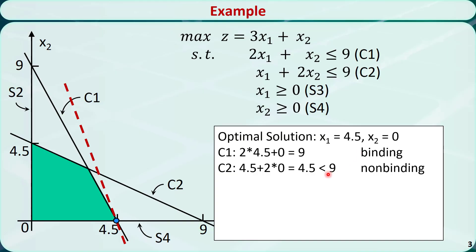For c2, we have 4.5 plus 2 times 0 is equal to 4.5, which is less than the right-hand side. So c2 is non-binding.